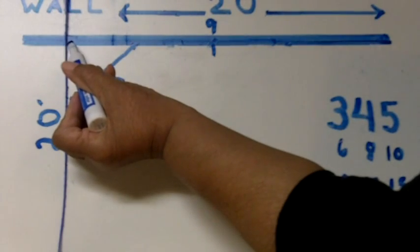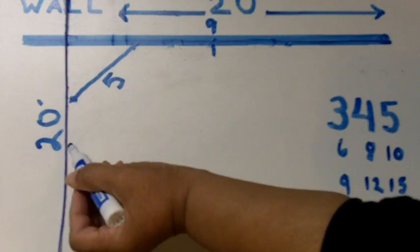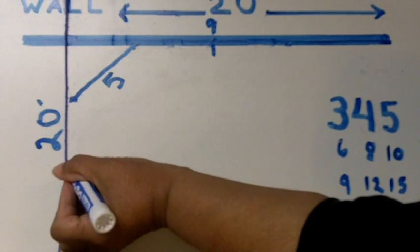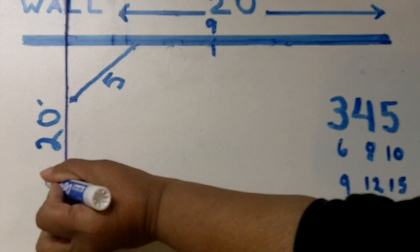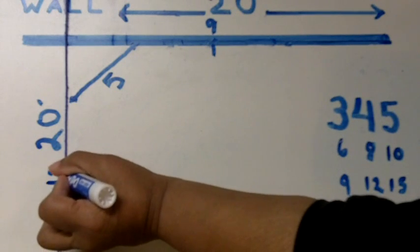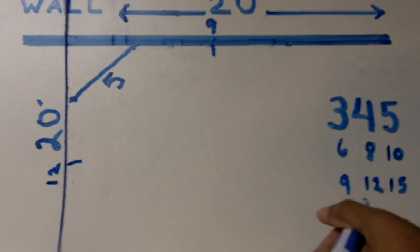Then we're going to do the same thing over here on our chalk line. We're going to start at the corner. We're going to go on down and make a hash mark at the 12 feet mark. Okay? That hash mark represents 12 feet. Alright.